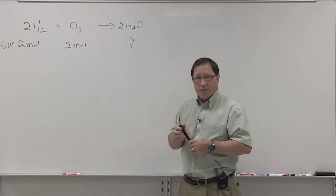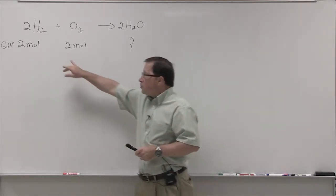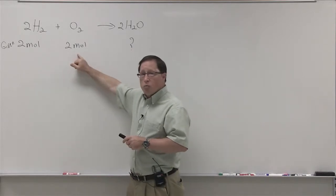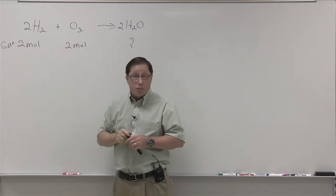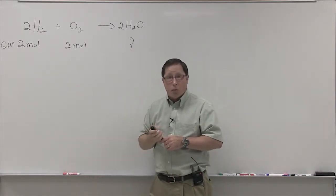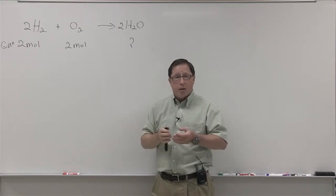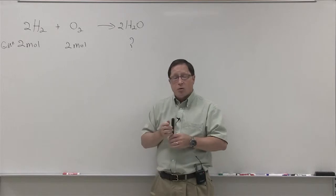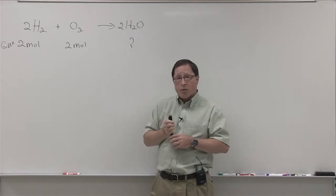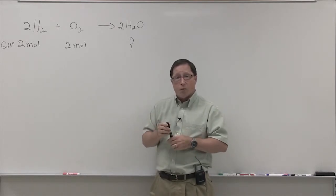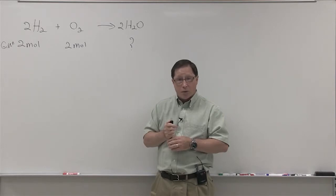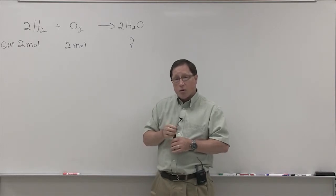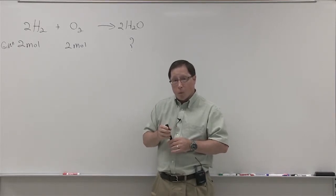If we are given that we're starting with two moles of hydrogen and two moles of oxygen, it's important to know which of these would run out first in the process and be your limiting reagent. So to do that we base it on the ratio between the hydrogen and oxygen in the balanced equation. There are several ways you can do this and I'd like to show you both ways.